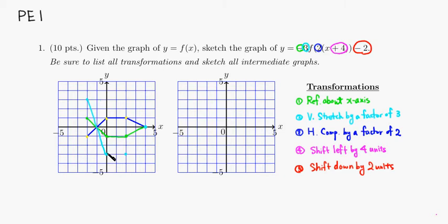The next transformation is a horizontal compression by a factor of two, so every x-coordinate becomes one half of its value. The x-coordinate negative two becomes negative one. The x-coordinate zero divided by two is still zero. Positive two becomes one, and x-coordinate four becomes two. Connecting them together you end up getting something like this.